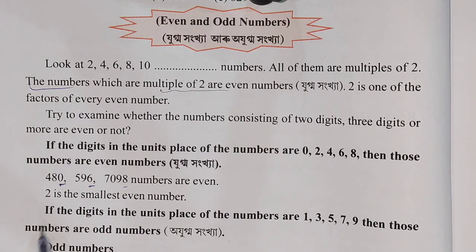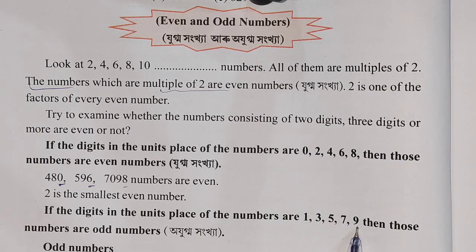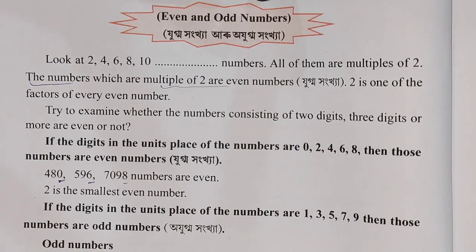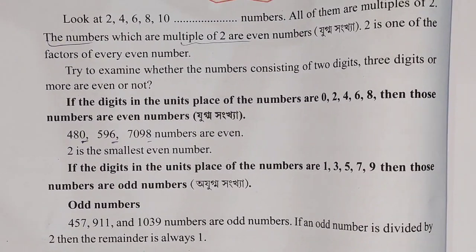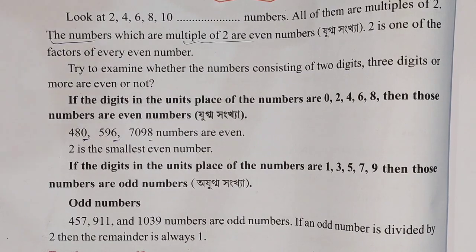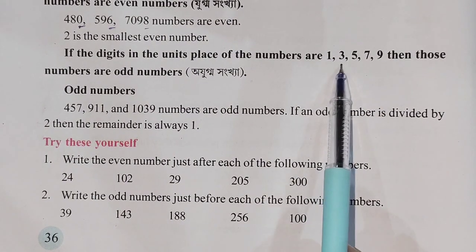Next, if the digit in the units place of a number is 1, 3, 5, 7, or 9, then that number is an odd number.